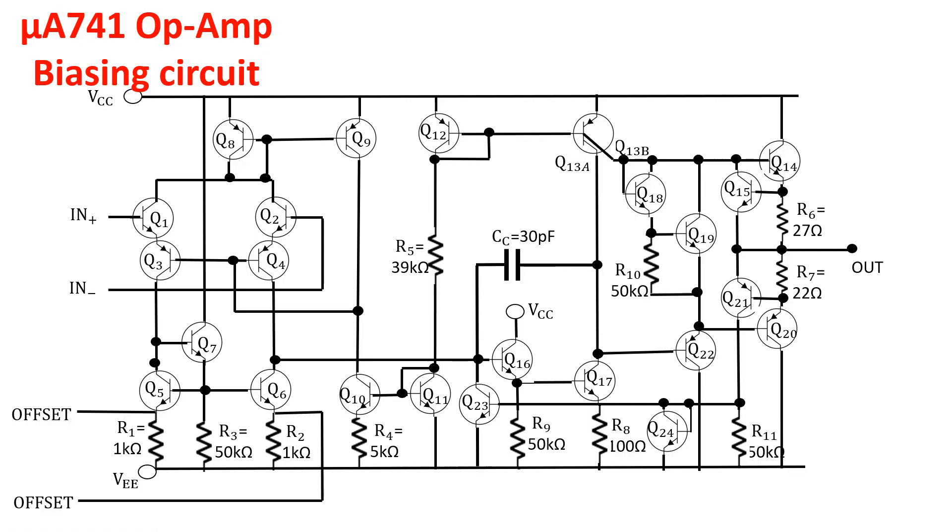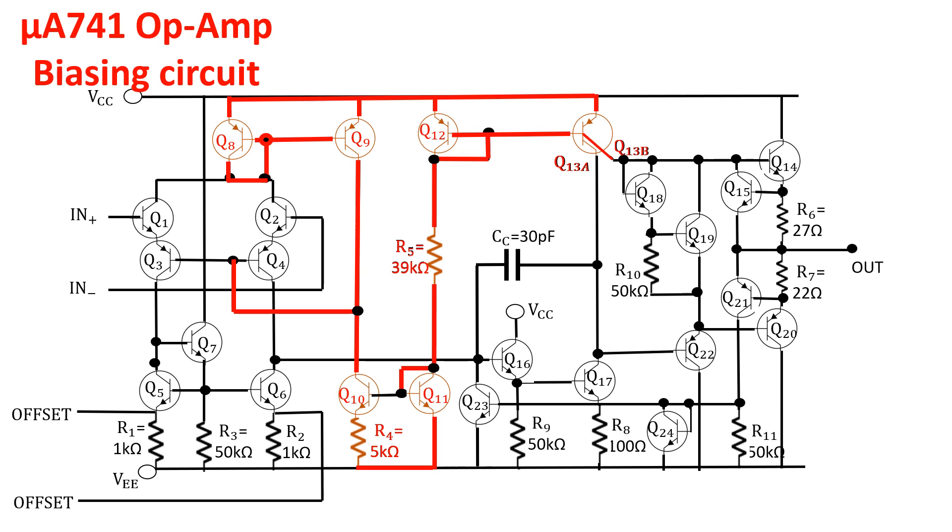One typical example of a Widlar current source is the μA741 operational amplifier in which Dave Fullager uses it for the biasing circuit. In the op-amp, you need a small biasing current in the first stage and a much larger current in the second stage. So, a Widlar current source is perfect to get both biasing currents. This is the branch where the current is produced. Q12 and Q11 are in transdiode configuration.